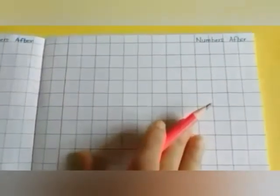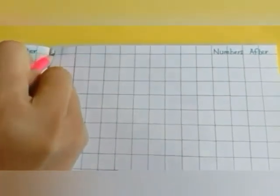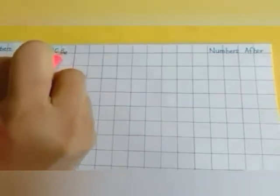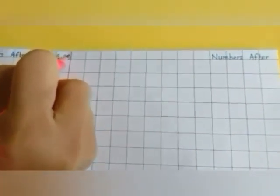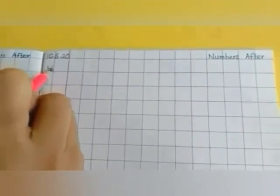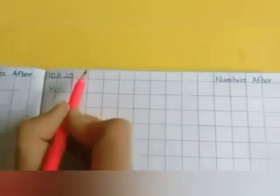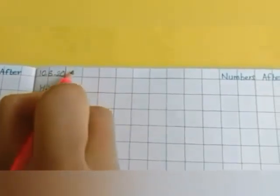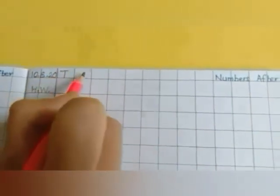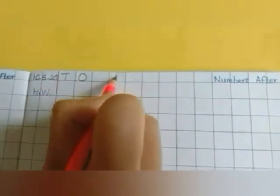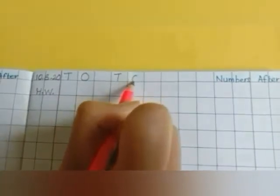Now on the right side page, you will do your homework. So in the left corner, write the date. Leave one box. Again write T, and in the next box, O.